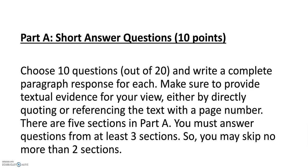There are two parts to the exam. Part A is short answer questions, and that is 10 points. Each question you write in part A is worth one point because I'm asking you to choose 10 questions out of 20 and write a complete paragraph response for each. Make sure you provide textual evidence for what you say. You can either give a direct quote or an indirect quote, but reference the text with a page number. There are five sections in part A, and you must answer questions from three of them, which means you can only skip two sections.